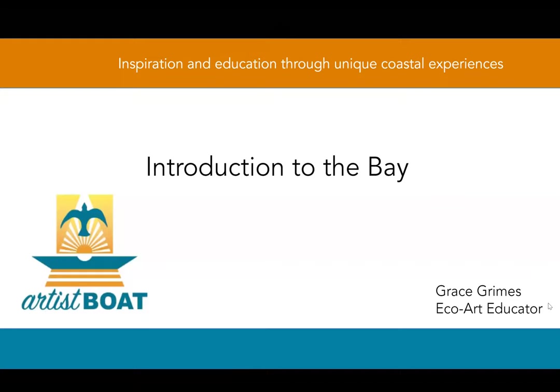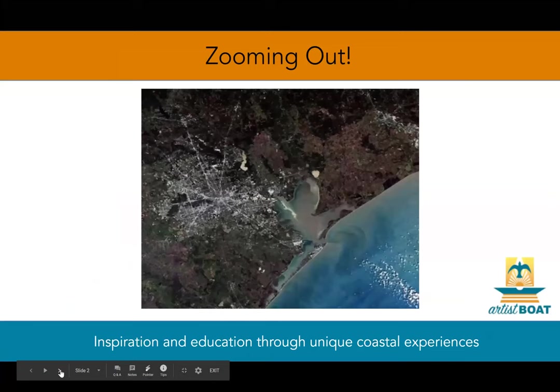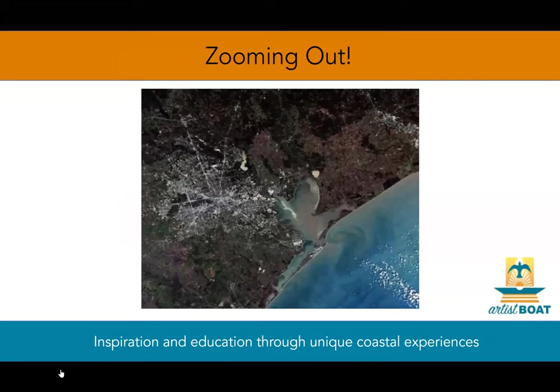This presentation serves as an introduction to Galveston Bay. Here's a satellite image of Galveston Bay. It's actually the largest estuary in Texas and the second most productive bay fishery in the entire United States. It covers over 600 square miles of mostly brackish water averaging about nine feet in depth.